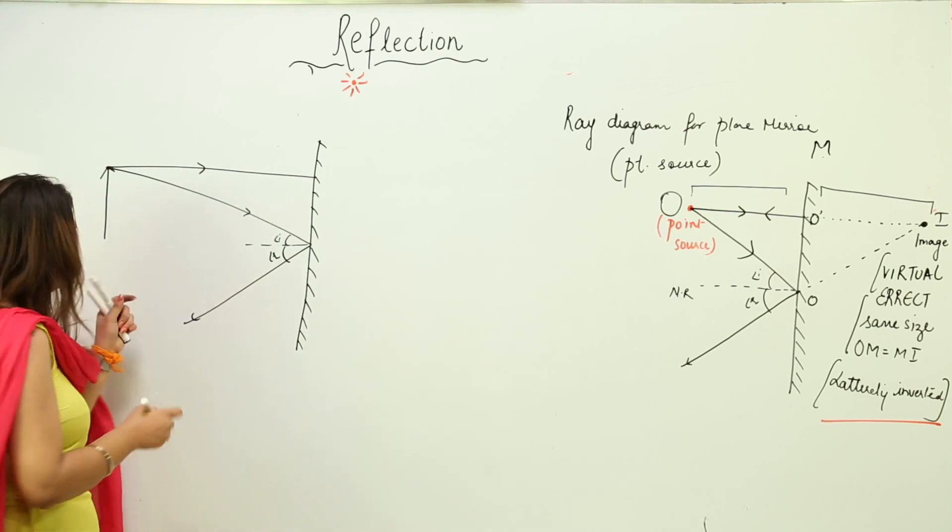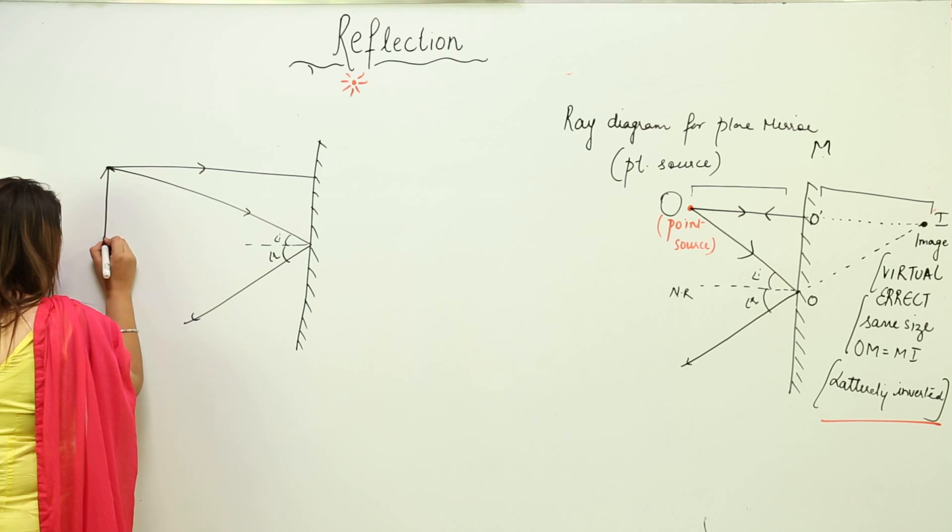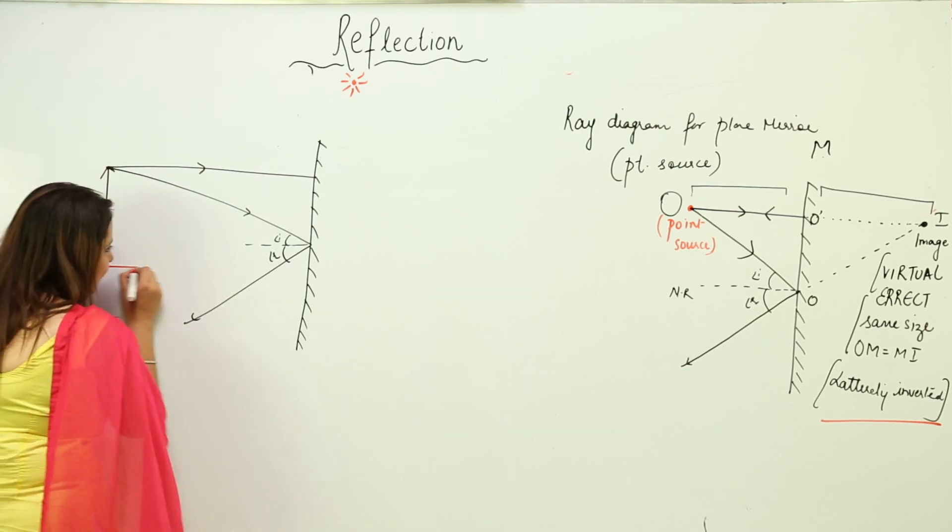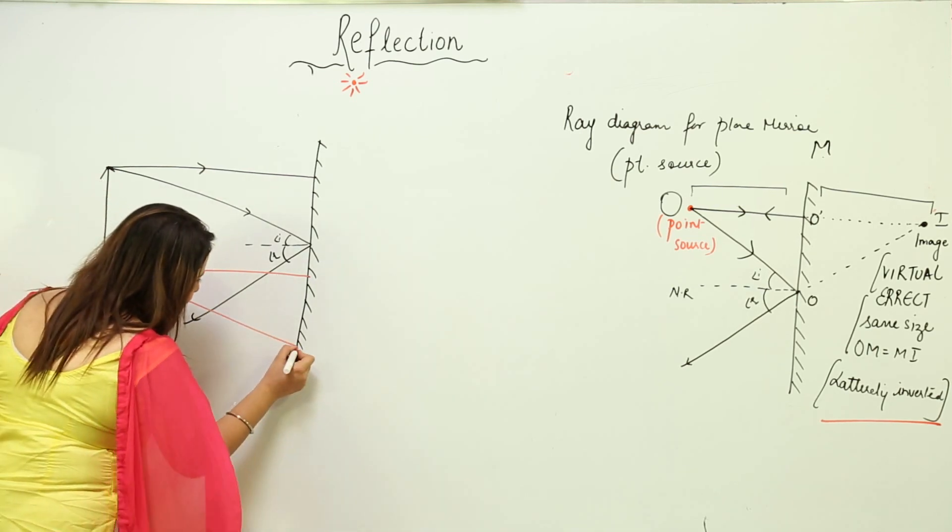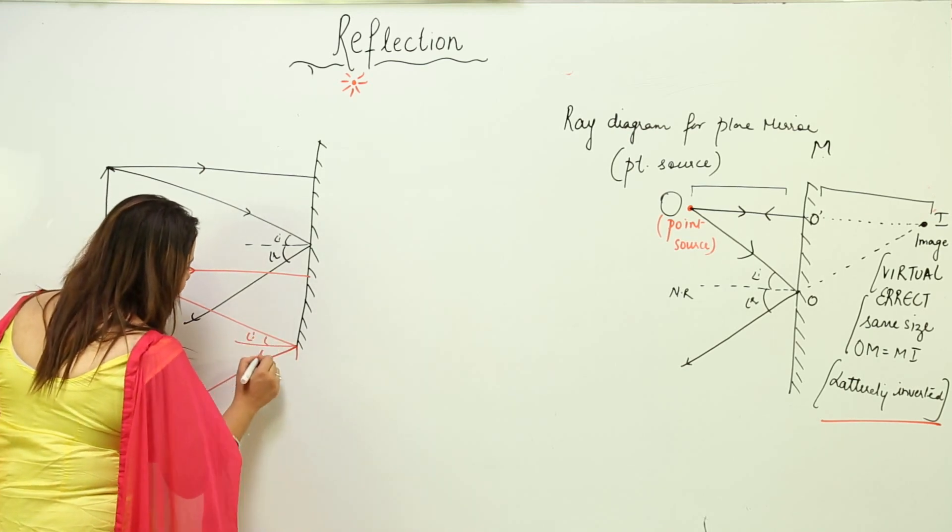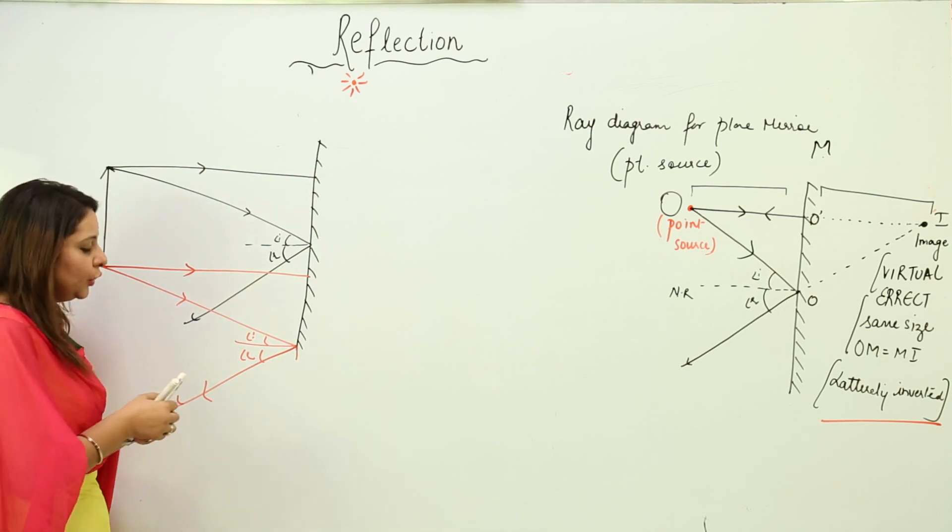Let's just extend it a little so it doesn't mess up with the other ray. This is the perpendicular ray from this point, and this ray is striking at this angle. Again, this is angle i and this is angle r.